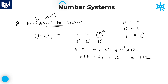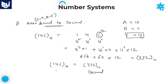332 is the required decimal number. The base value must be 10. So 14C base 16 is equivalent to 332 base 10. This is the decimal number corresponding to the given hexadecimal number 14C.